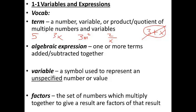Next up, algebraic expression. One or more terms added or subtracted together. So all of these are algebraic expressions. These first four are all just called single terms or monomials, and this one here is called a binomial.